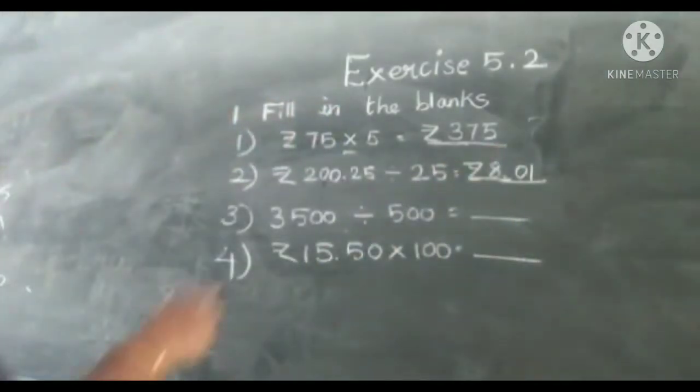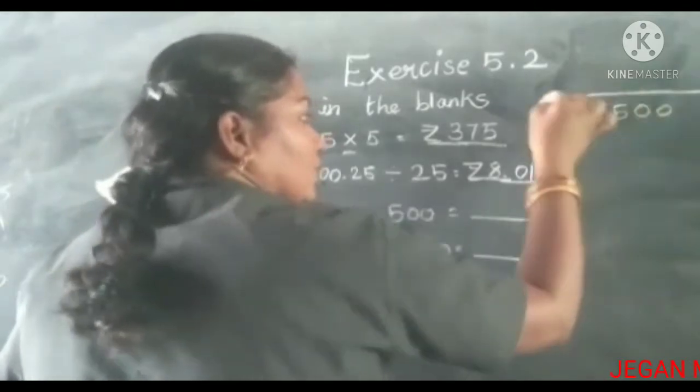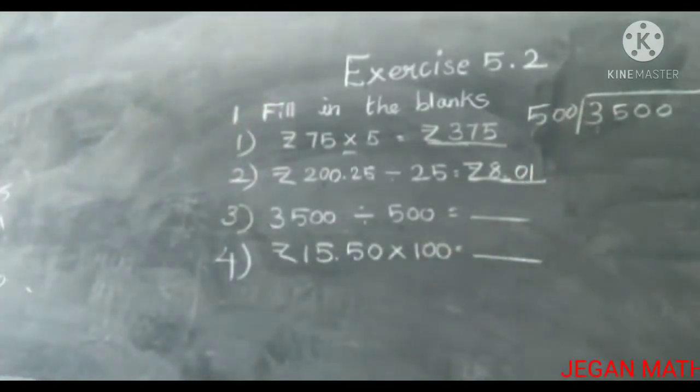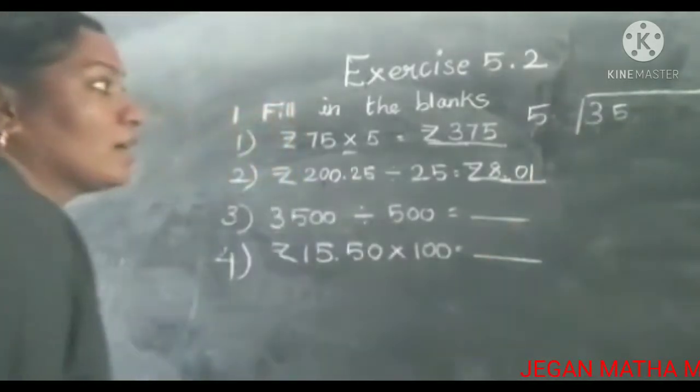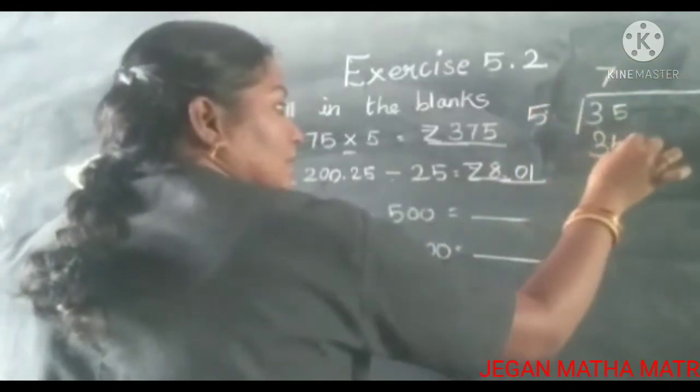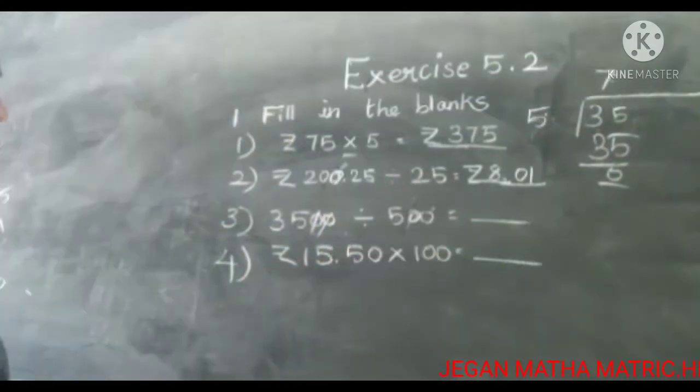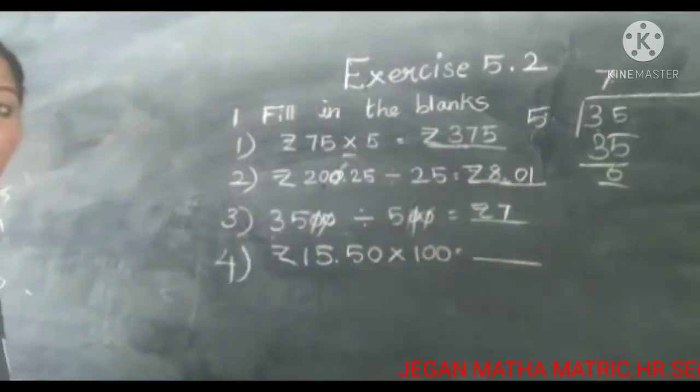Next one, 3500 divided by 500. Same thing. You can do one more method also. First you cancel the 2 zeros. Now check. 7 fives are 35. Because 2 zeros are cancelled. So 7.